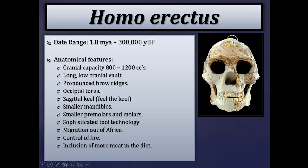Homo erectus also has a sagittal keel — similar in location to the sagittal crest seen in gorillas, orangutans, and robust australopithecines, but less obvious. As the saying goes, you can see the crest but you have to feel the keel. We also see relatively smaller mandibles and smaller posterior dentition — smaller premolars and molars — again due to a more generalized diet combined with using fire and stone tool technologies to process food prior to consumption.